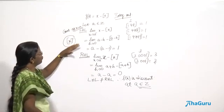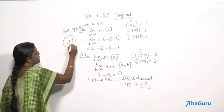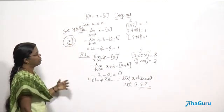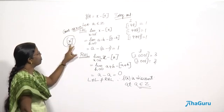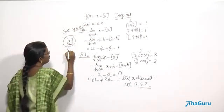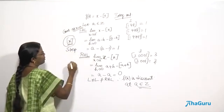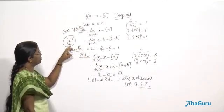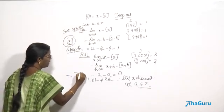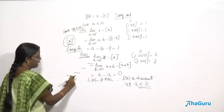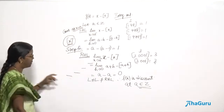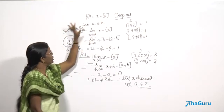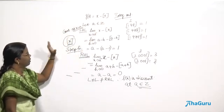Looking at the graph of these functions — especially the greatest integer function — you will see that at every integral value, for every integer positive, negative, or zero, there is a break in the graph. The function appears in the form of steps, which is why it is also called the step function. Whether it is x minus the greatest integer function or only the greatest integer function, both are discontinuous at every integral value.